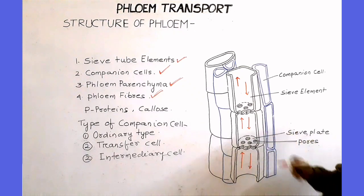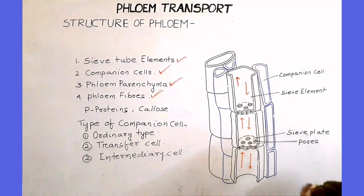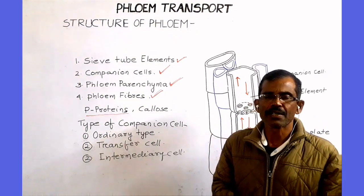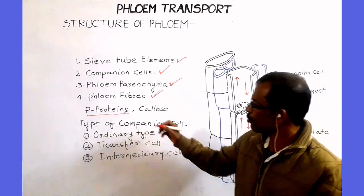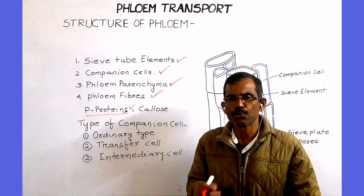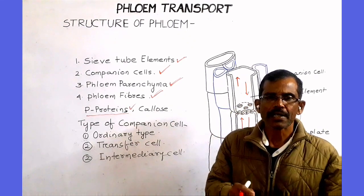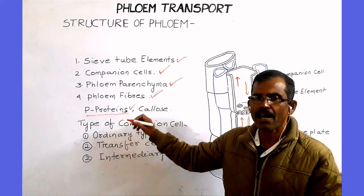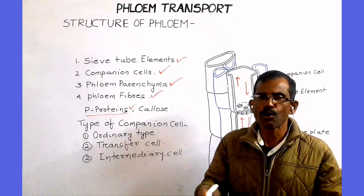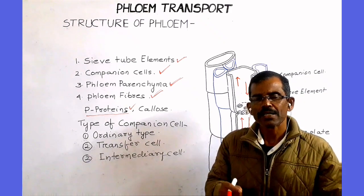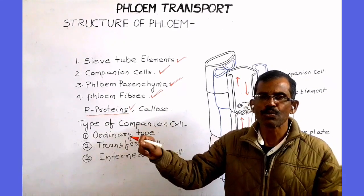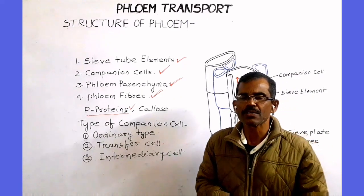These pores provide a continuous passage for the movement of sap through the sieve tube. The sieve tube elements contain a special type of protein known as P-proteins. These proteins could be fibrillar or tubular. In intact sieve tube elements, these proteins are located along the inner wall, so the pores remain open. When the sieve tube elements are damaged, these P-proteins block the sieve pores, thereby reducing the loss of sap.